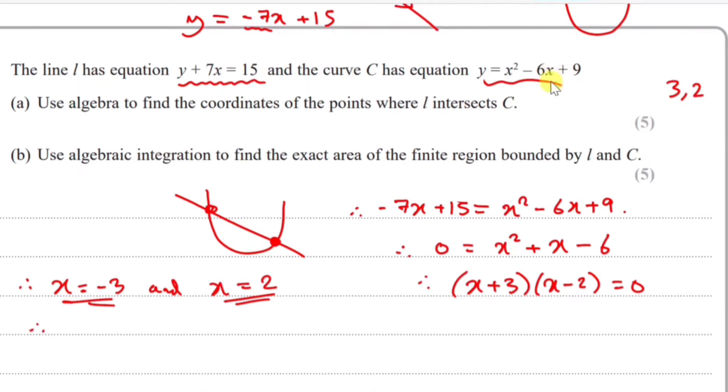The first one: y = -7(-3) + 15. You should get an answer of 36. So the first coordinate is (-3, 36).